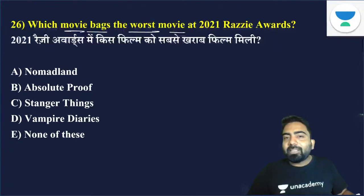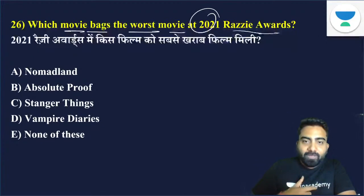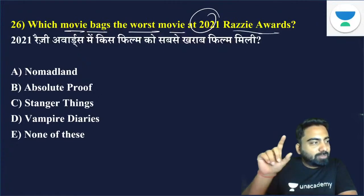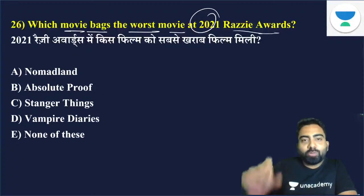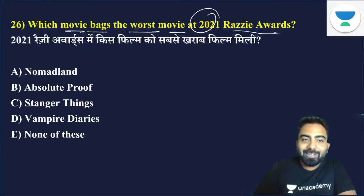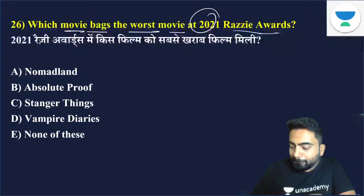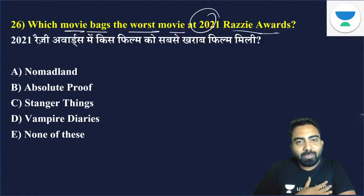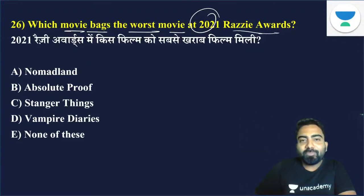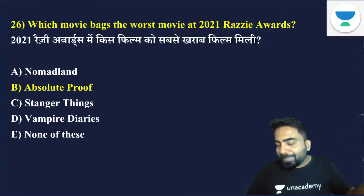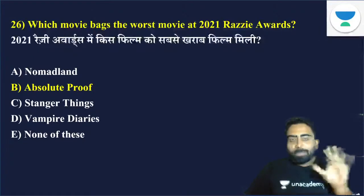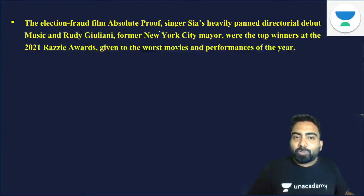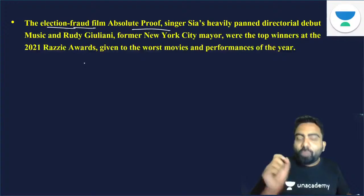Which movie bagged the worst movie at the 2021 Razzie Award? We have five options. The answer is Absolute Proof — option B is the right answer. This was a film made on election fraud, and it received the Worst Movie award at the 2021 Razzie Awards.